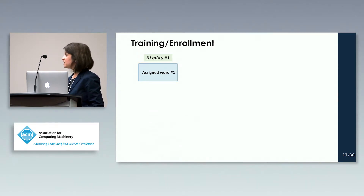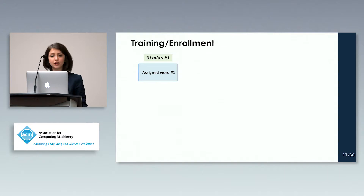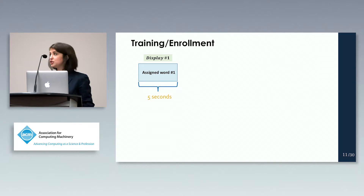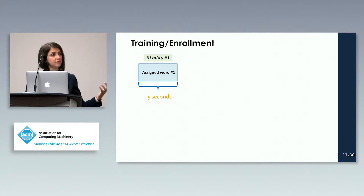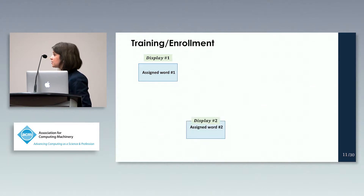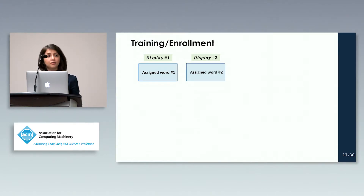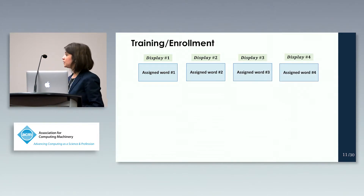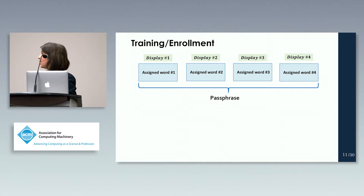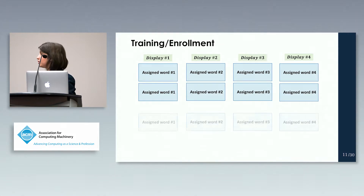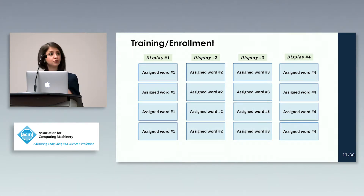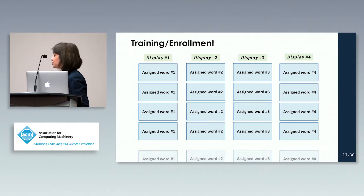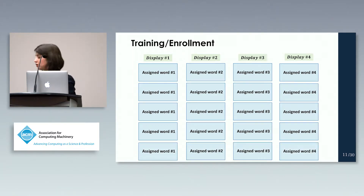A training phase contains a set of displays. On each display there is one word of the passphrase, and each display is presented for five seconds, following the same approach used in contextual cueing. The remaining three displays present the other passphrase words — so four displays, each representing one passphrase word. These displays are repeatedly shown to the user five times, with each display presenting one passphrase word.